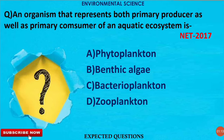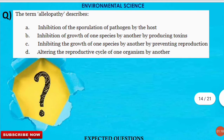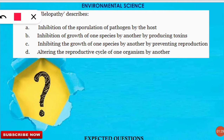The next question is: the term 'allelopathy' describes what? Read every option carefully. The correct option is option B. Allelopathy is the terminology given when the inhibition of growth of one species is caused by another species which produces some toxins.